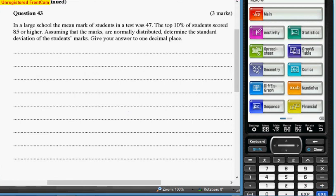Hello again. Here is a probability question involving the normal distribution. We've got a large school. Mean mark is 47. So the mean is 47.